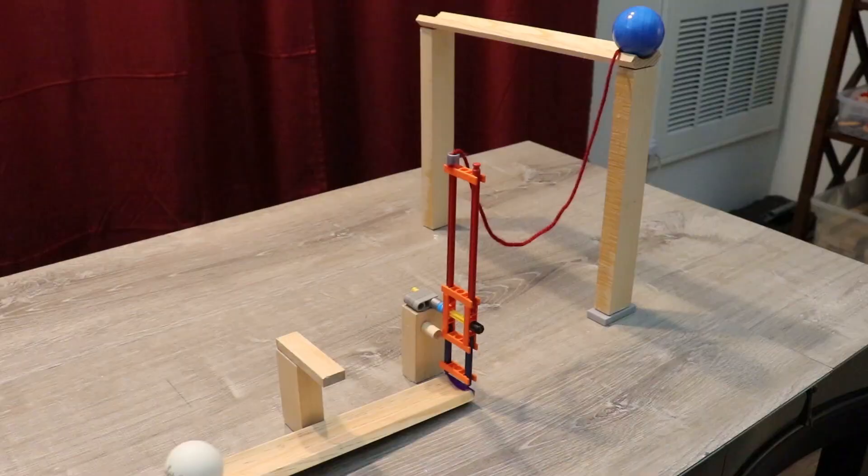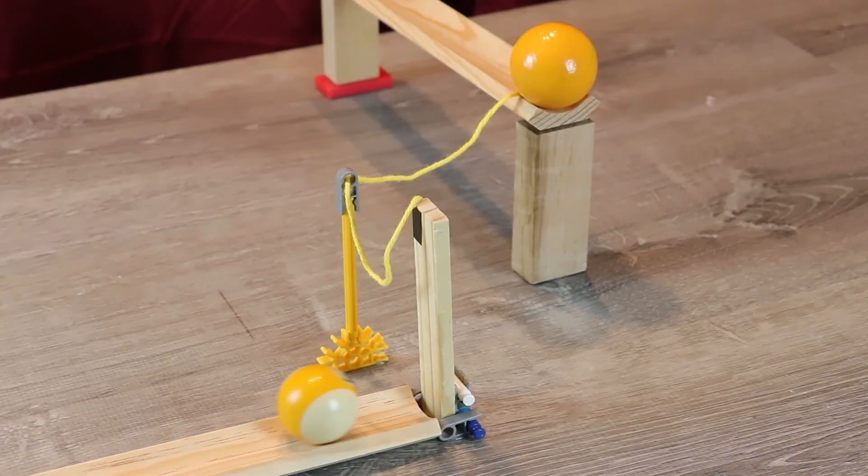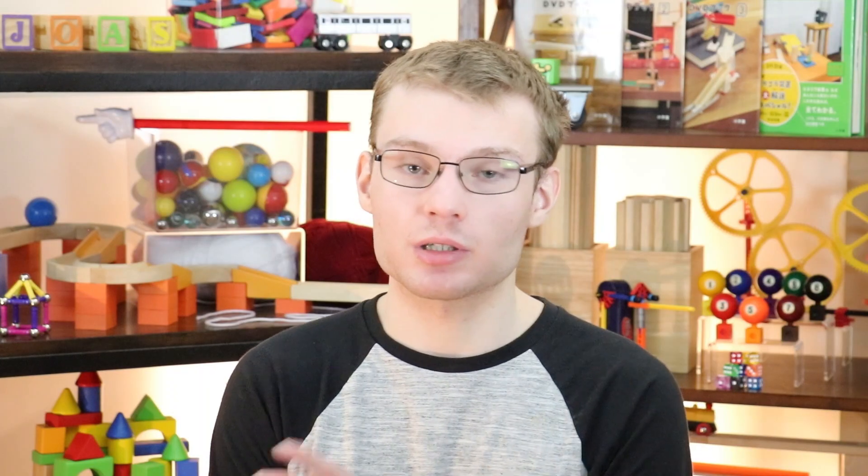Another application of the balance swing is using it to pull a string. In this example, releasing a ball on a track somewhere. You might notice that this is very similar to how we used a falling domino back in episode one. Except the advantage here with a balance swing is that it requires a potentially much less powerful input. You see, if you use a falling domino, depending on the weight of the domino, you might need a pretty significant force to push it over. But with a balance swing, you only need enough force to knock it out of balance.